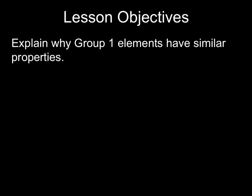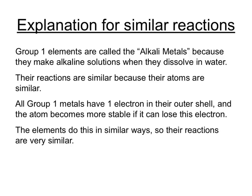You need to be able to explain why group 1 elements have got similar properties. The key to the similar reactions of group 1 elements lies in the similar atoms that the elements have. All atoms of elements in group 1 have one outer electron, and the atom becomes more stable if it can lose this electron. Because the elements lose that electron in similar ways with similar chemical reactions, their reactions are very similar. The only thing that differs is the ease with which they lose that electron and therefore the reactivity of the metal.